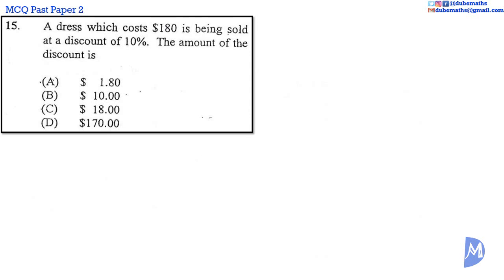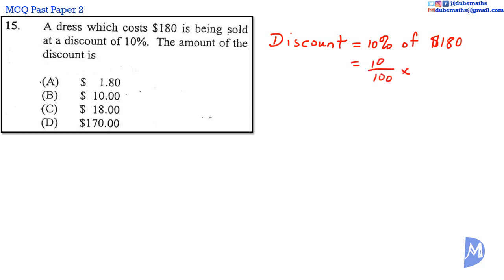Let's go. Question 15. A 10% discount on $180 is equal to 10% of $180, which is equal to 10 over 100 multiplied by $180. Cancelling, 1 multiplied by 18 is equal to $18. The answer is C.